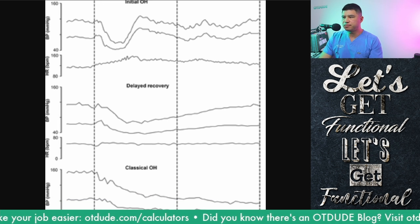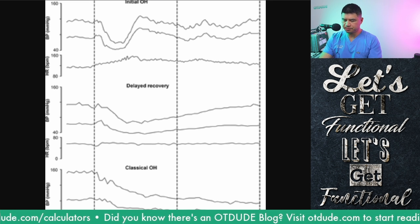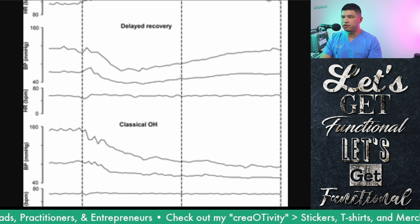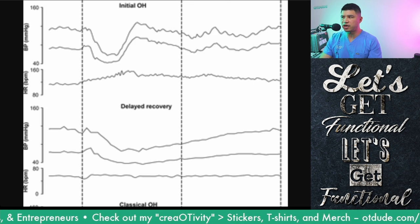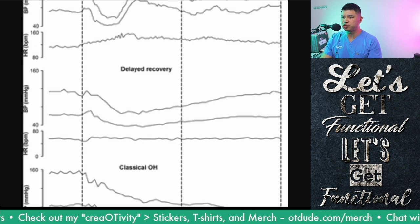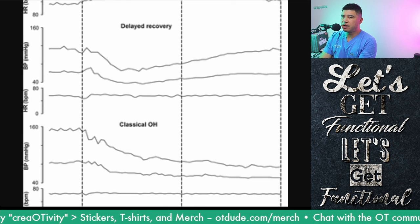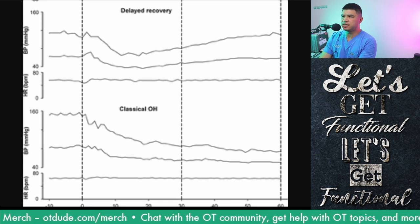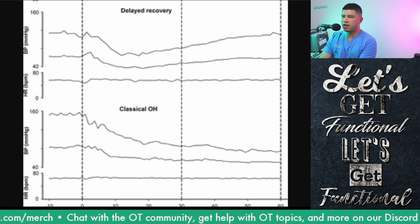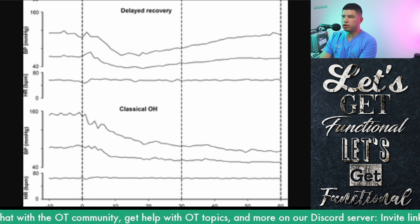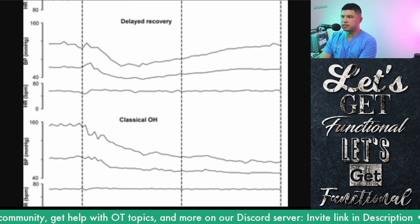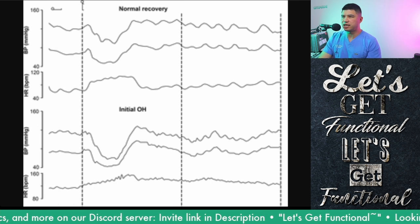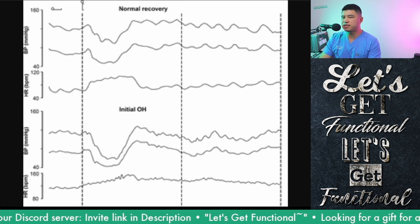The fourth graph shows classical orthostatic hypotension in a 76-year-old man with primary autonomic failure. He has a higher systolic blood pressure at baseline compared to the others. Right when he stands up there is a drop, but looking at the 30-to-60-second window, he does not have the recovery that the other patients had — neither the quick recovery of initial OH nor the delayed recovery of the third example.